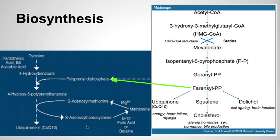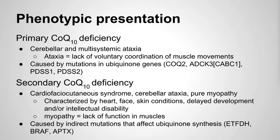In primary CoQ10 deficiency, the phenotypic presentation is cerebellar and multisystemic ataxia—the lack of voluntary coordination of muscle movements—caused by mutations in the ubiquinone genes. Secondary CoQ10 deficiency is caused by indirect mutations affecting ubiquinone synthesis and is characterized by heart, face, and skin conditions, delayed development, intellectual disability, and myopathy—the lack of muscle function. CoQ10 biosynthesis requires at least 15 genes.